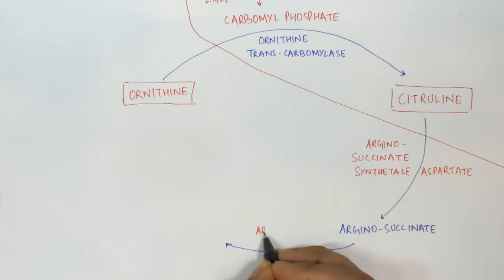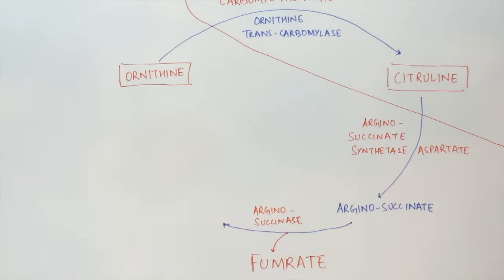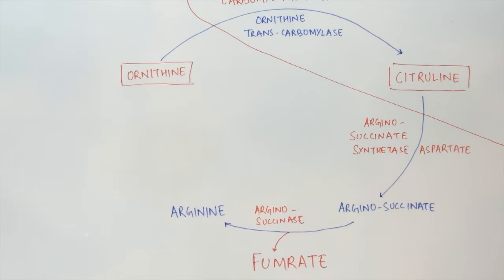In the next step, the enzyme arginosuccinate lyase acts upon the arginosuccinate and lyses it to produce two molecules: fumarate and arginine.